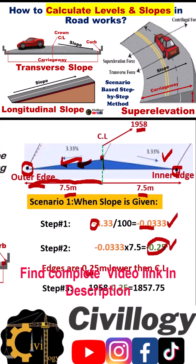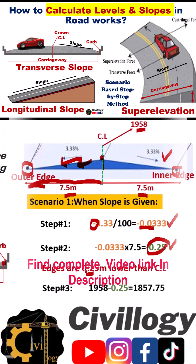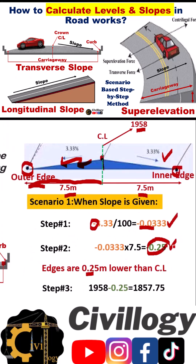In step number three: subtract this value of 0.25 from the centerline level, and you will get the level of the edges on both sides of the road.